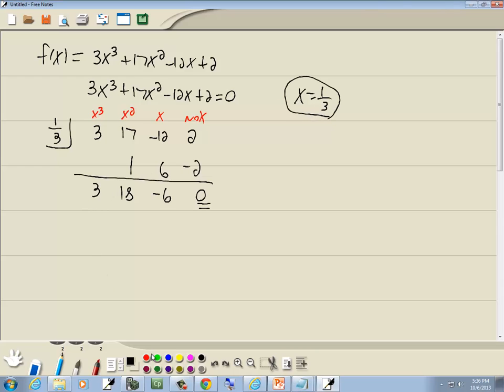What we're left with: this says x to the third, this is 1 degree lower so this will be x squared, this is x, and this is no x. So we're left with 3x squared plus 18x minus 6 equal to 0.